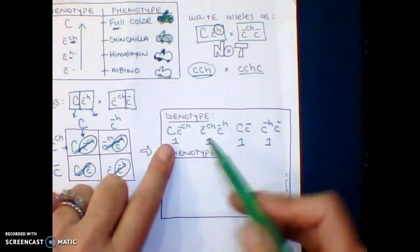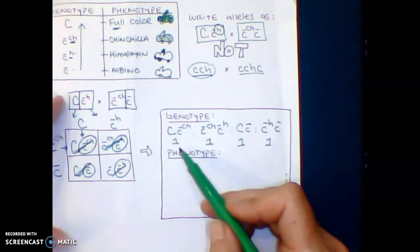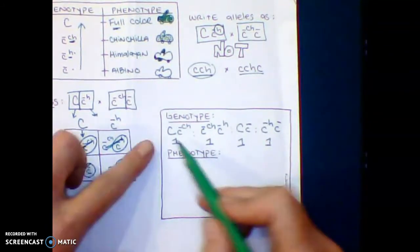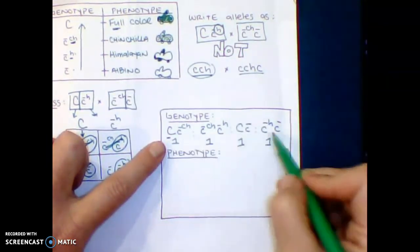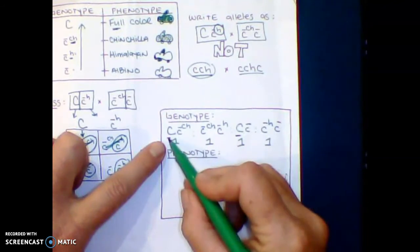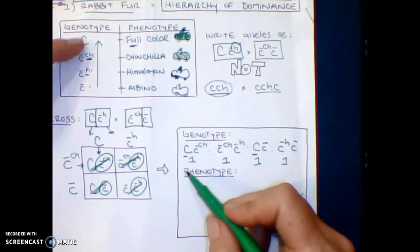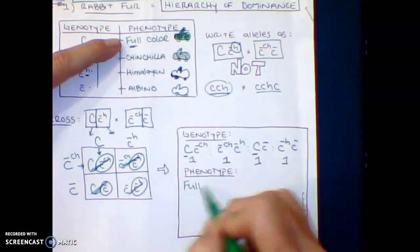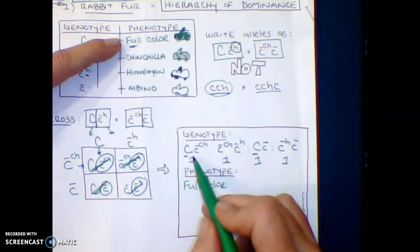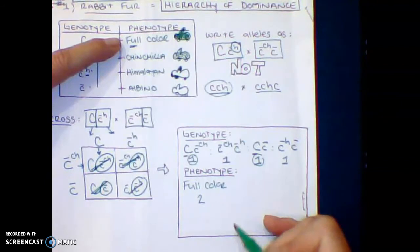So let's start with the first one, big C. So how many big Cs do we have? Well, here's a big C, and there's a big C. And big C, according to our higher up, big C represents full color. So our phenotype is full color. Again, how many do I have? I have one here and one here, so that is two.